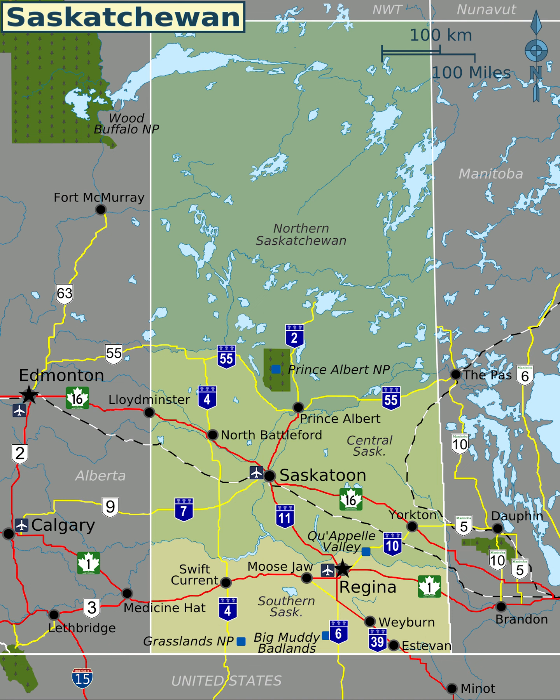However, the 49th parallel boundary and the 60th northern border appear curved on globes and many maps. Additionally, the eastern boundary of the province is partially crooked rather than following a line of longitude, as correction lines were devised by surveyors prior to the Homestead Program, 1880–1928.